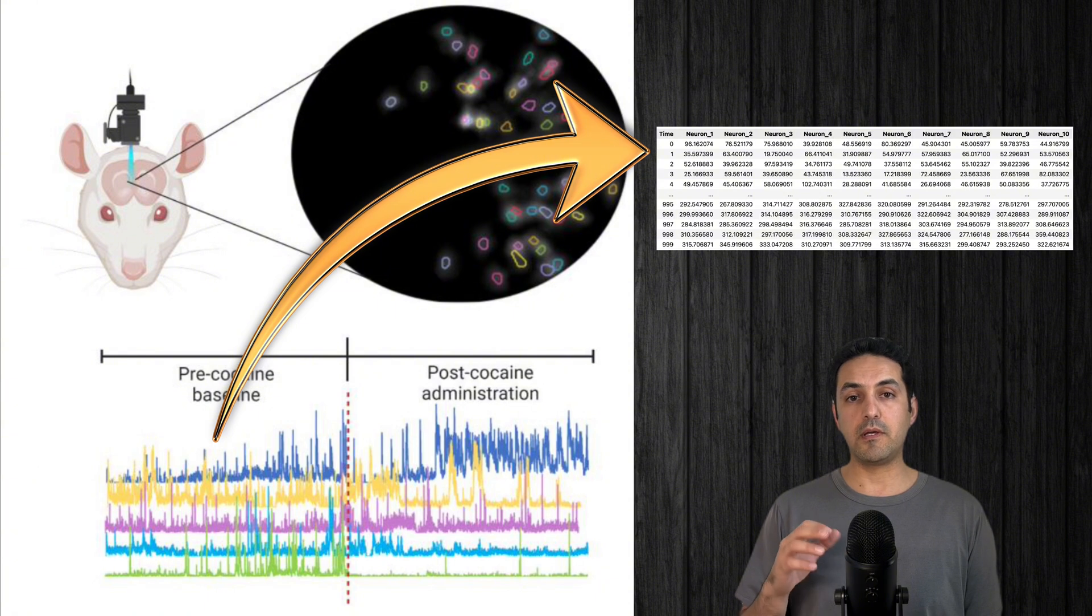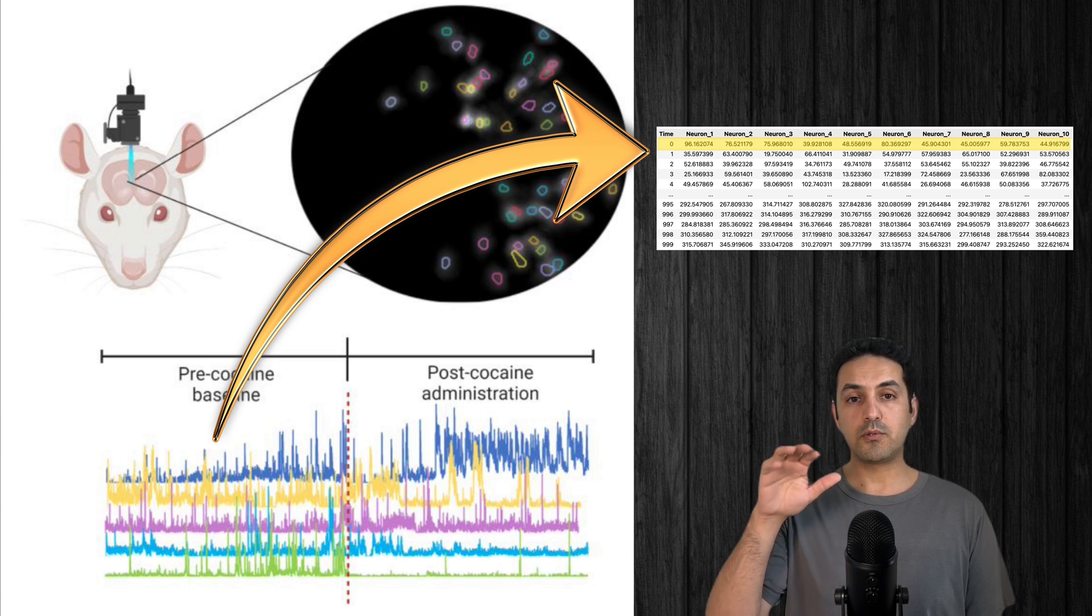Every row of the spreadsheet was a snapshot of all those neurons simultaneously. Every snapshot, every row, was taken in time intervals of 0.1 seconds.